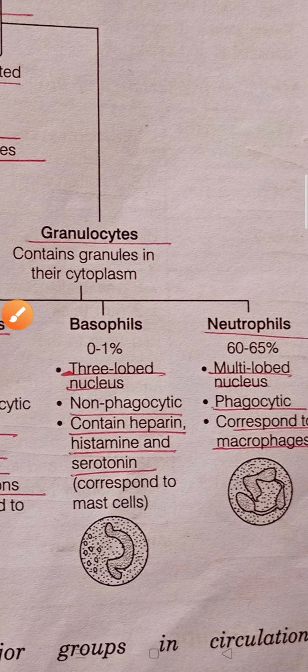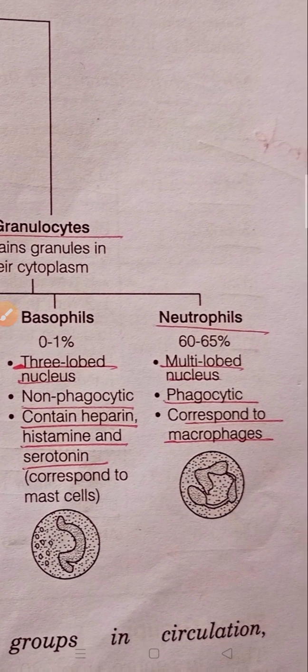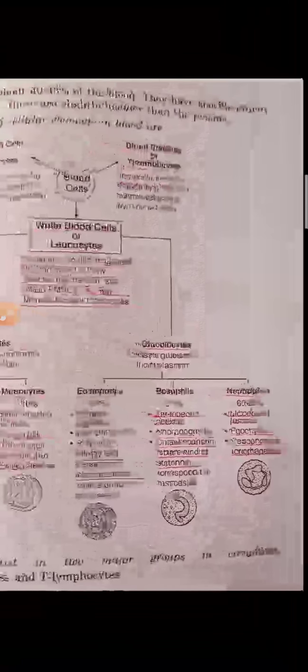Basophils constitute 0 to 1 percent of blood. They have three lobes and are non-phagocytic. They contain heparin, histamine, and serotonin. Neutrophils constitute 60 to 65 percent of blood and have a multi-lobed nucleus. They are phagocytic and correspond to macrophages — meaning they engulf foreign material and show the phagocytosis process.